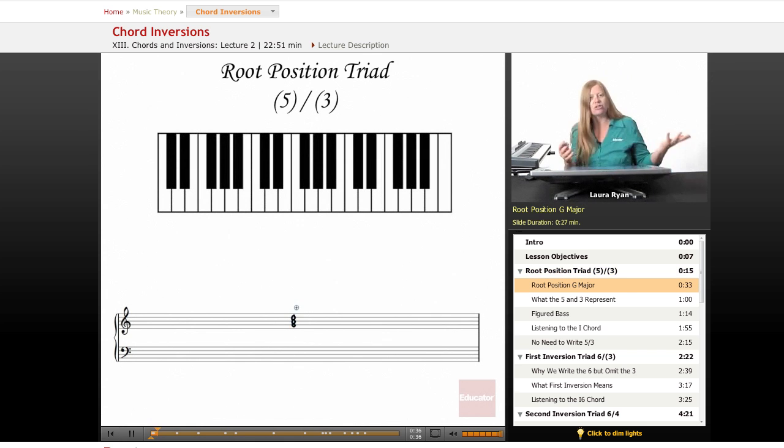Here is our triad G, B, D. This is in the key of G, this is one. This is called root position because the key that we're in is on the bottom, and then the third is in the middle, the fifth is on the top.